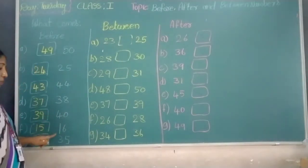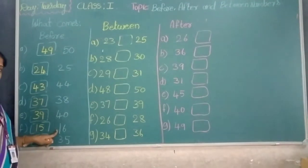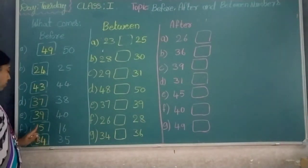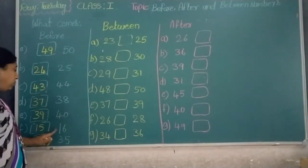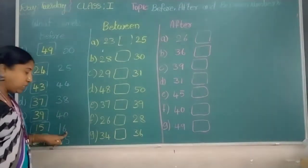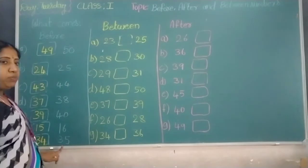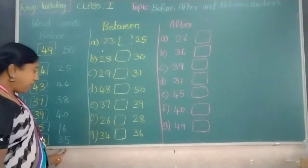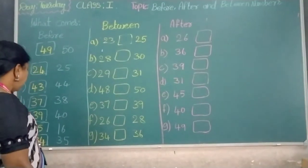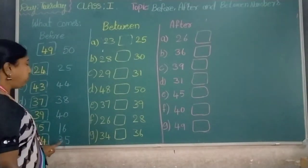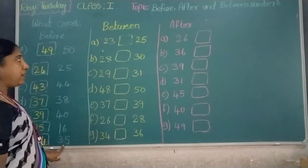What comes before 60? 59 comes before 60. What comes before 35? 34 comes before 35.